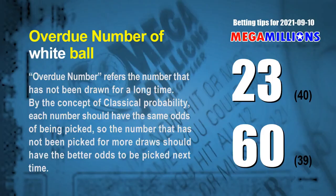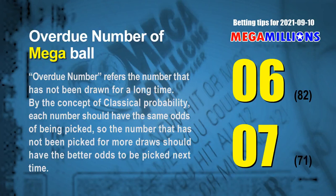Overdue numbers refer to numbers that have not been drawn for a long time. By classical probability, a number not picked for more draws should have better odds next time. The two most overdue white balls are 23 and 60: white ball 23 has not been drawn for 40 draws, white ball 60 for 39 draws. The two most overdue Mega Balls are 06 and 07: Mega Ball 06 not drawn for 82 draws, Mega Ball 07 not drawn for 71 draws.